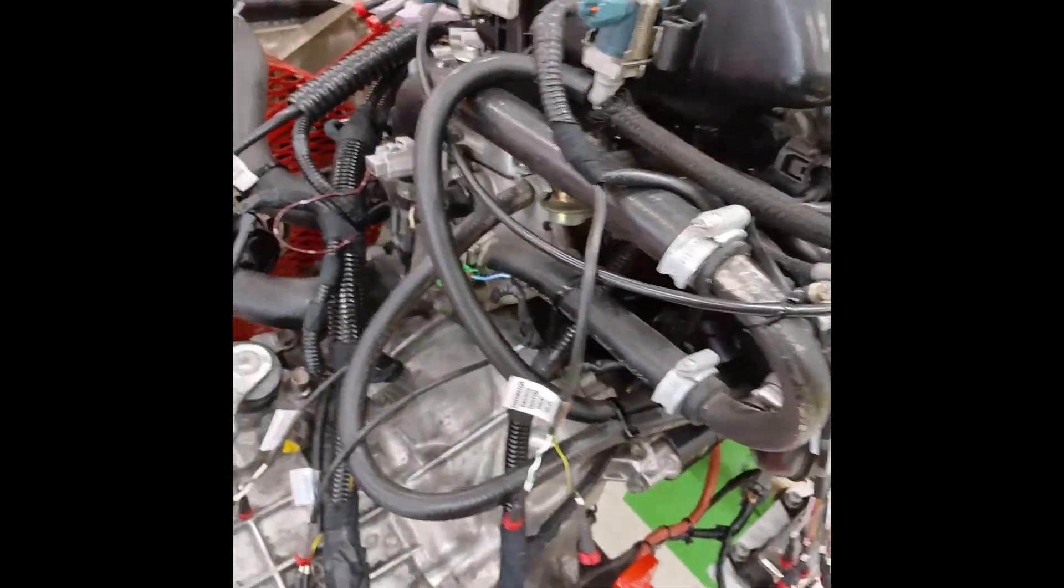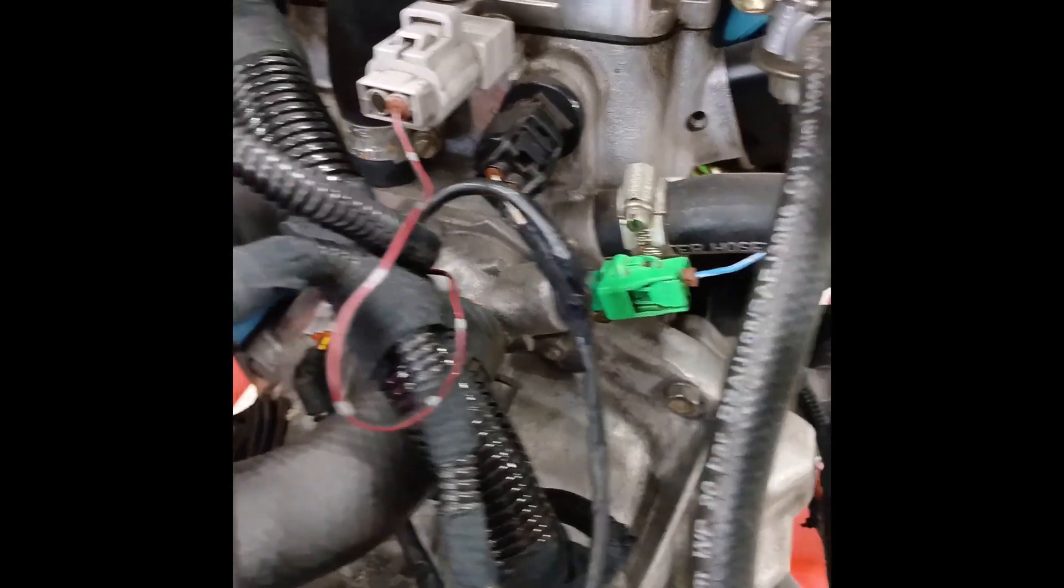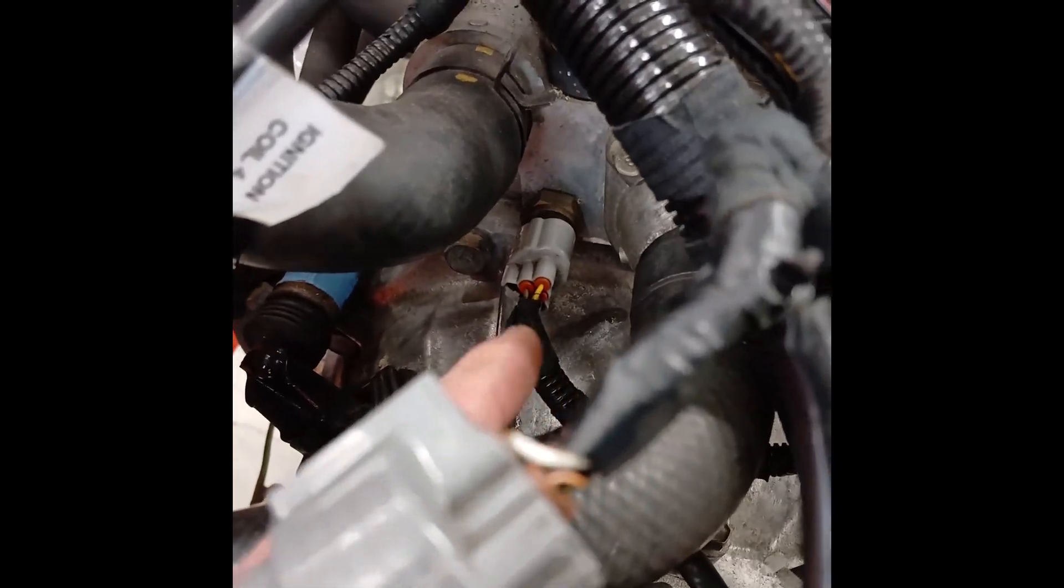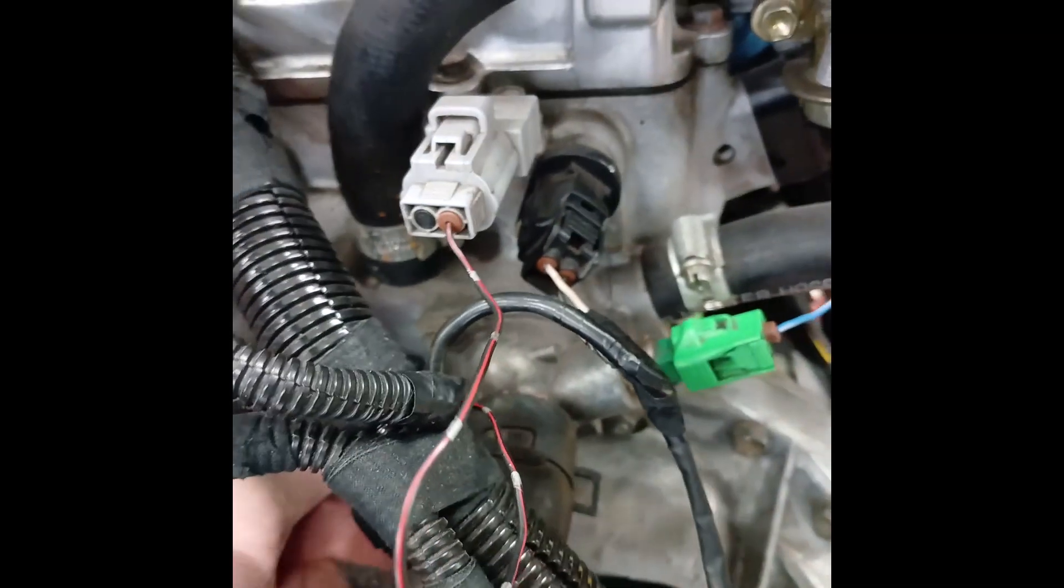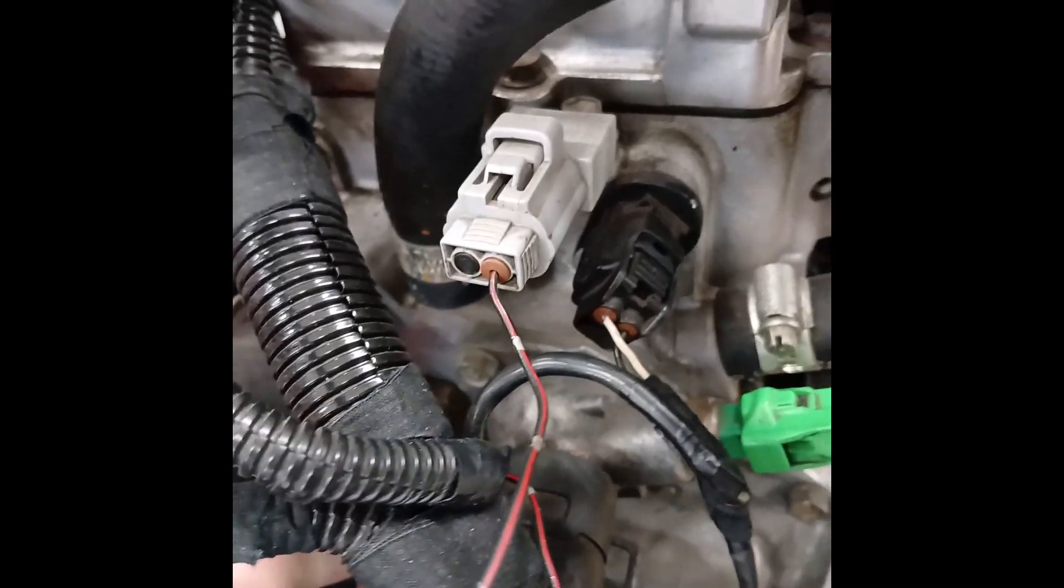I'll just show quickly there now what the open circuit looks like on live data. So just plug out the coolant temperature sensor here to put a simulated broken sensor or open circuit sensor. And we'll go back and look at live data now.